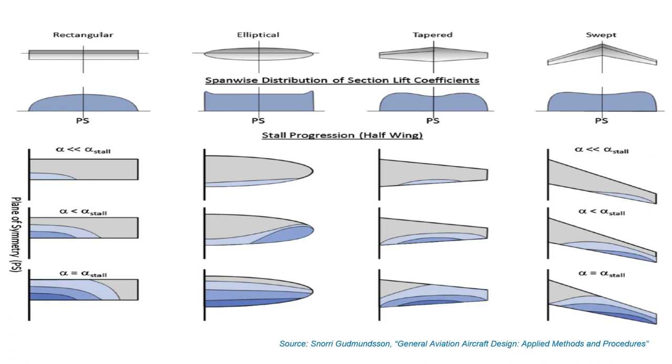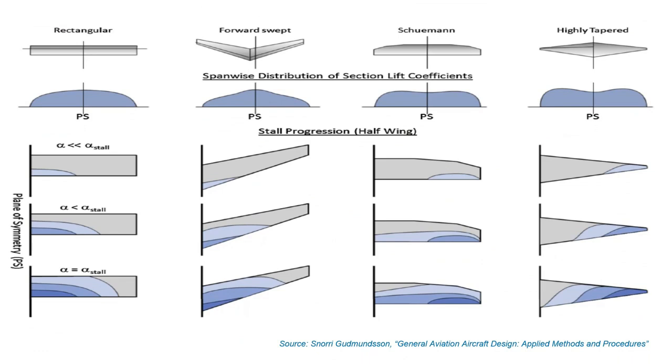So basically there are four platforms: Rectangular, Elliptical, Tapered, and Swept. First is the Rectangular wing.